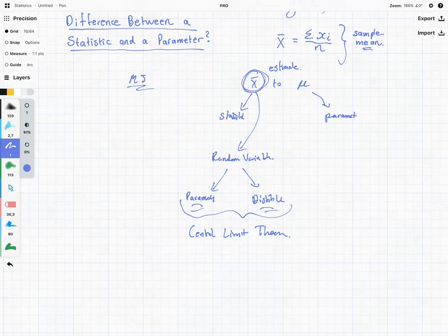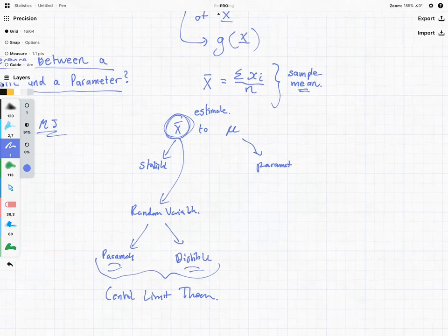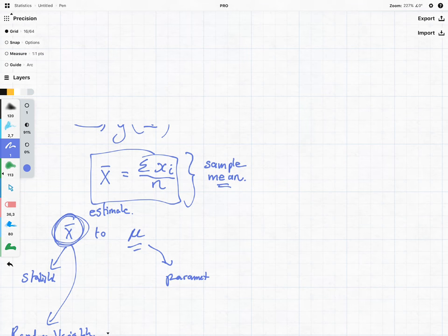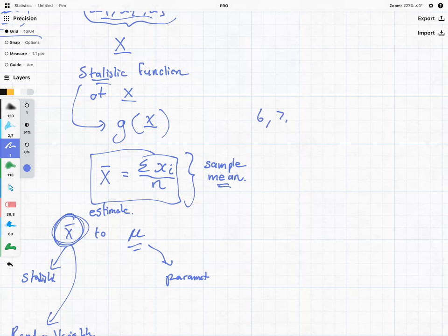Now, why we care about that is because, let's say we just want to say, okay, give me a single point estimate of what mu is, we just calculate this value here. And we say, let's say we had 6, 7, 8, we go 6 plus 7 plus 8 divided by 3. And we can say, okay, cool, 7 is our estimate for the parameter.